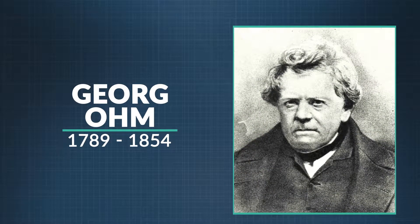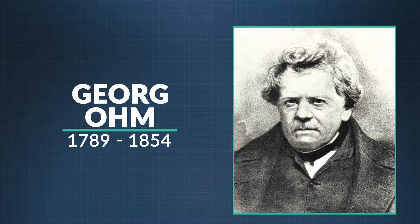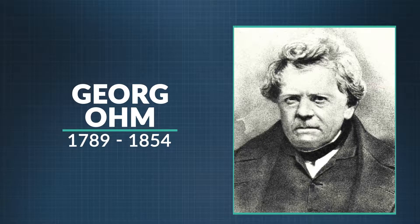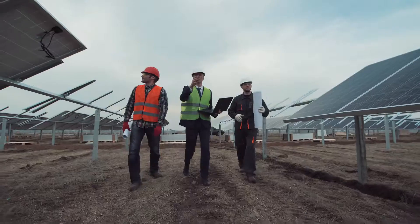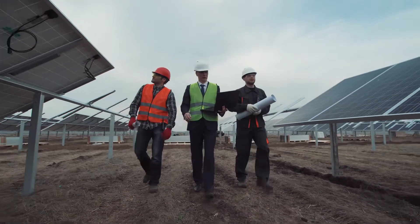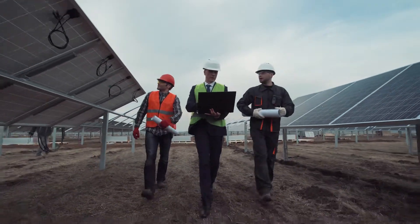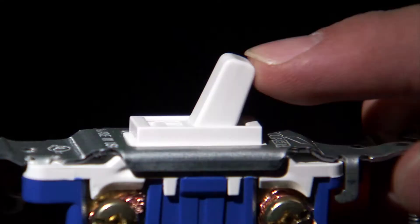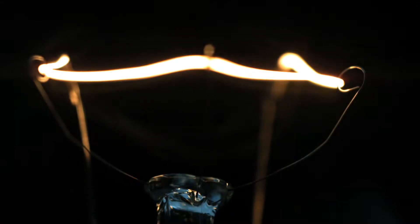Ohm is the last name of a German physicist and mathematician who back in the 19th century solved a mystery that led to major advances in our ability to use electricity safely and reliably. Ohm figured out how three basic aspects of electricity relate to each other. Knowing how these three properties affect each other is what lets engineers design circuits — the paths that we use to send electricity where we want it to go and do.